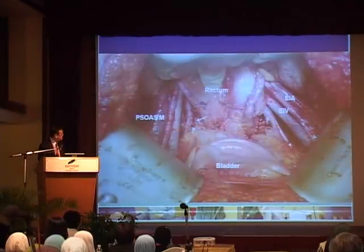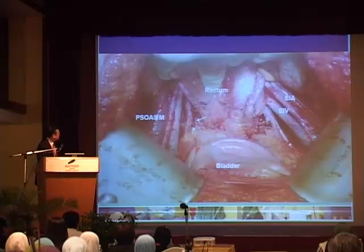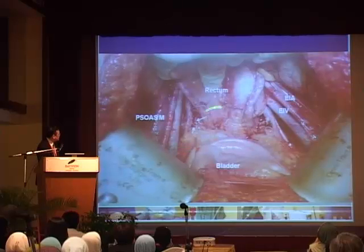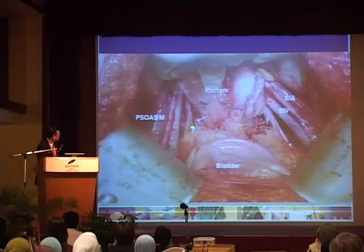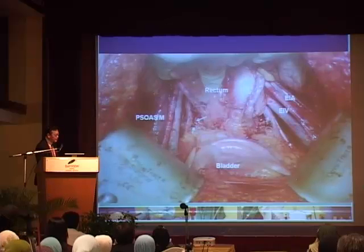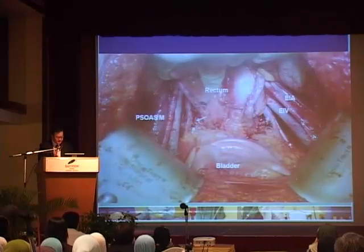After the nerve is dissected, we have a picture — an overview after pelvic node dissection and the radical hysterectomy. Looking at the pelvis, you can visualize the hypogastric nerve and the pelvic splanchnic nerve, which is at the base of the floor of the pelvis.